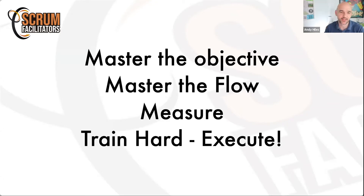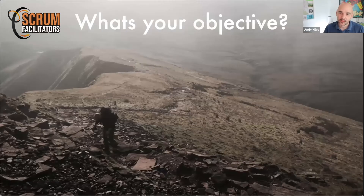Here are the lessons — and these lessons can be translated into Scrum with Kanban: master the objective, master the flow, measure, and train hard. One thing to bear in mind when we talk about doing Kanban with Scrum — Scrum doesn't disappear. Scrum has this great thing called a goal. For me, my goal was to get from 5:15 down to sub-four. Ensuring there is a goal behind every sprint is really important.